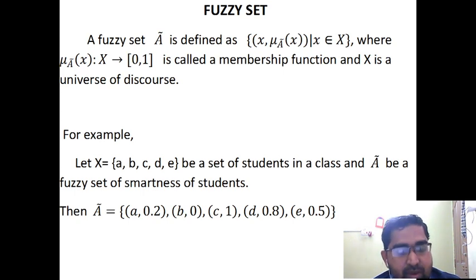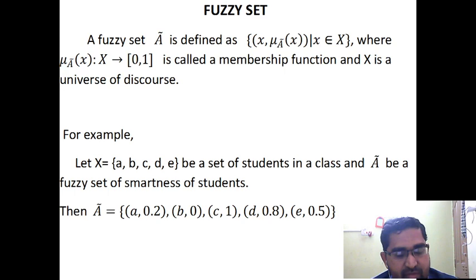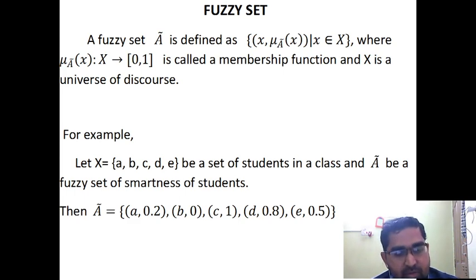So here, we take A as the set of all ordered pairs. What is given: (a, 0.2) means the student a has 20% smartness. The student b has membership value 0, which means they are completely not smart. Student c has membership value 1, meaning they are 100% smart. Student d has membership value 0.8, meaning 80% smart. Student e has membership value 0.5, meaning 50% smart. This is the advantage of a Fuzzy Set.